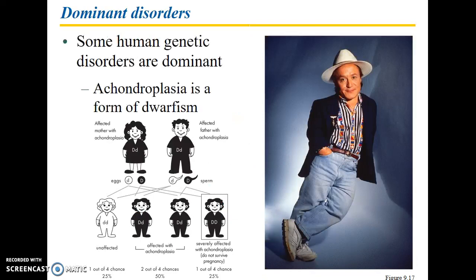There are also examples of genetic disorders that are dominant in nature. Don't confuse dominance with prevalence. A dominant genetic disorder means the allele masks the effect of another allele at that locus — it does not mean the disorder is more common or prevalent in a family line.